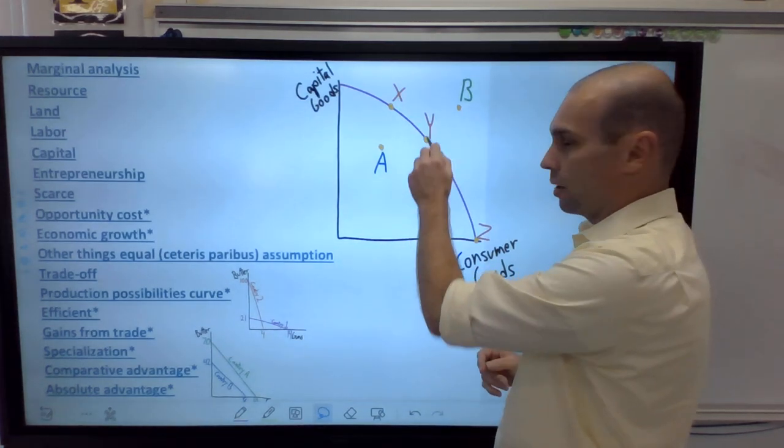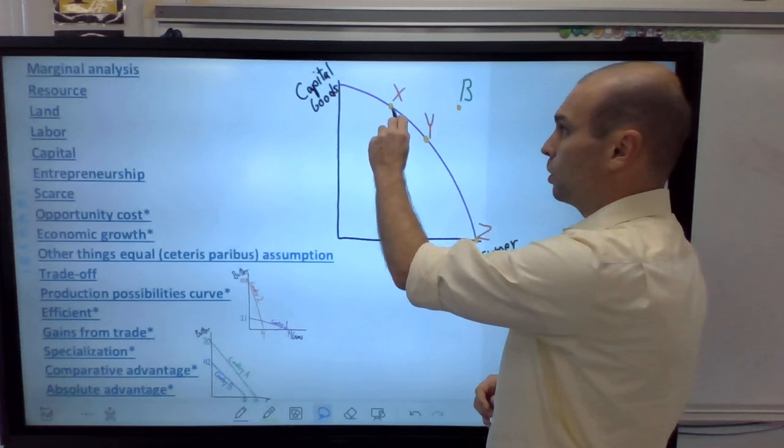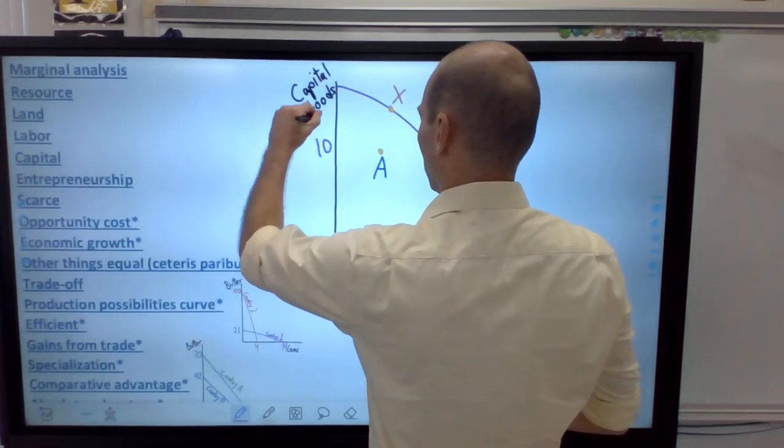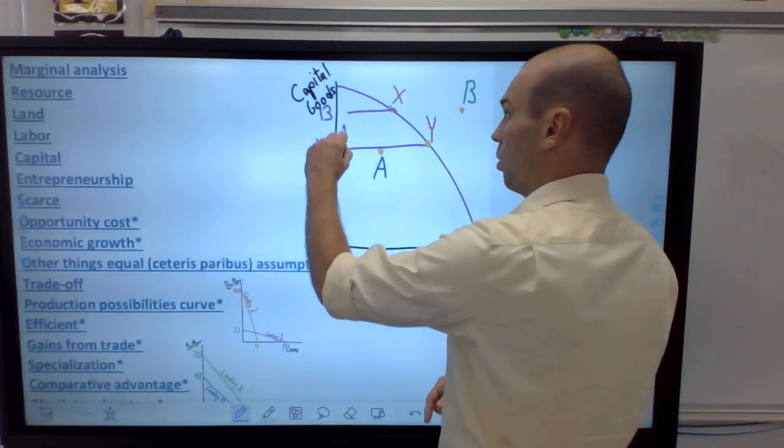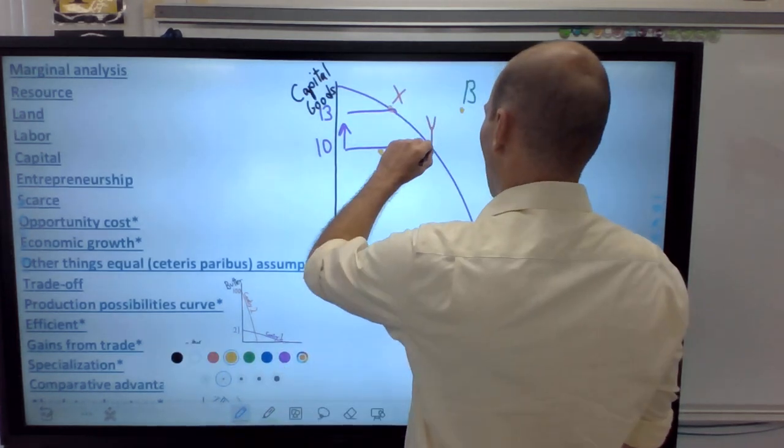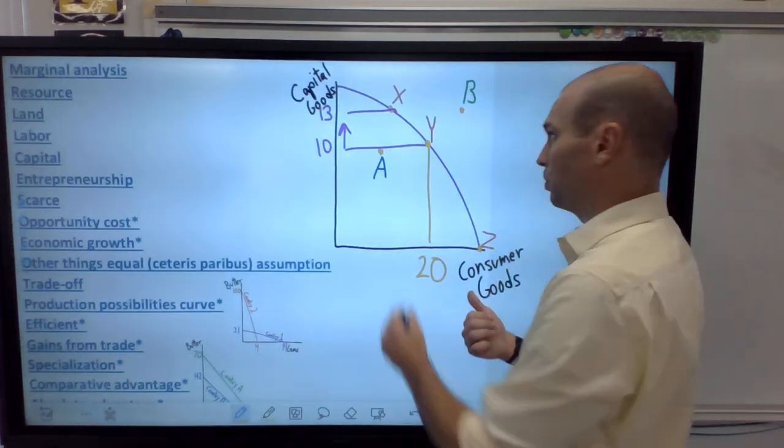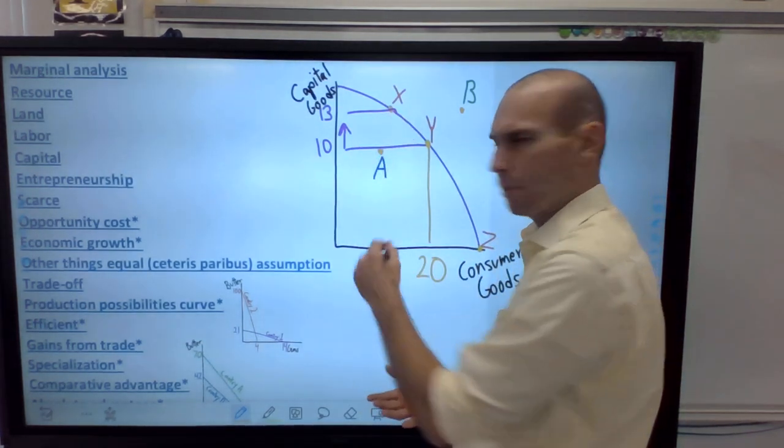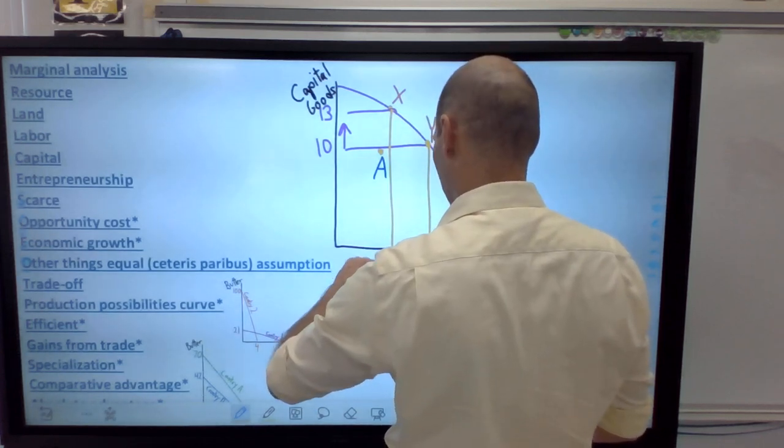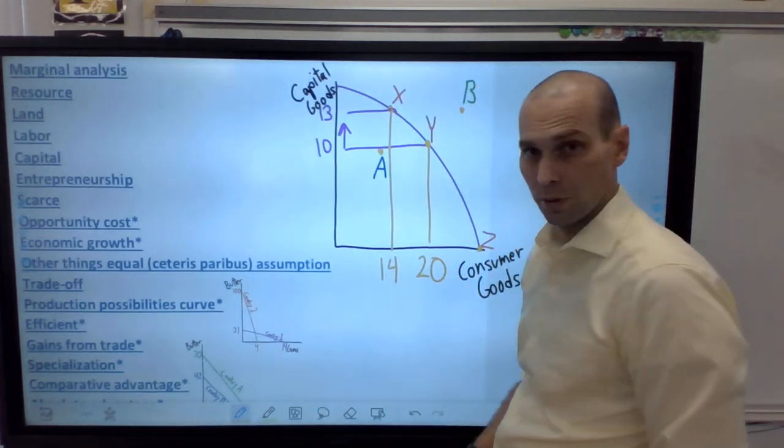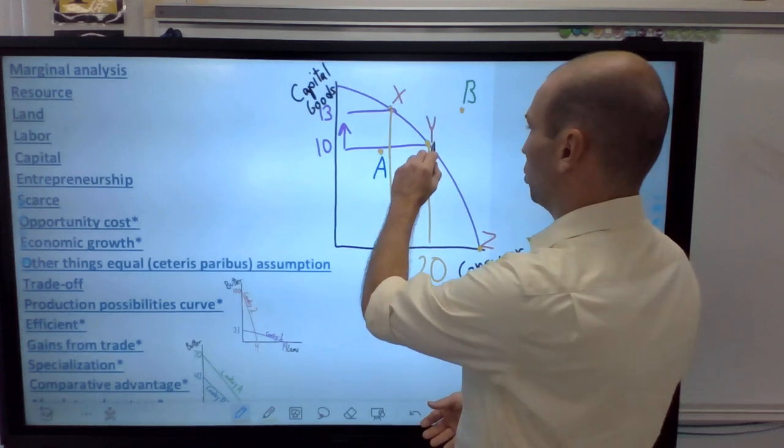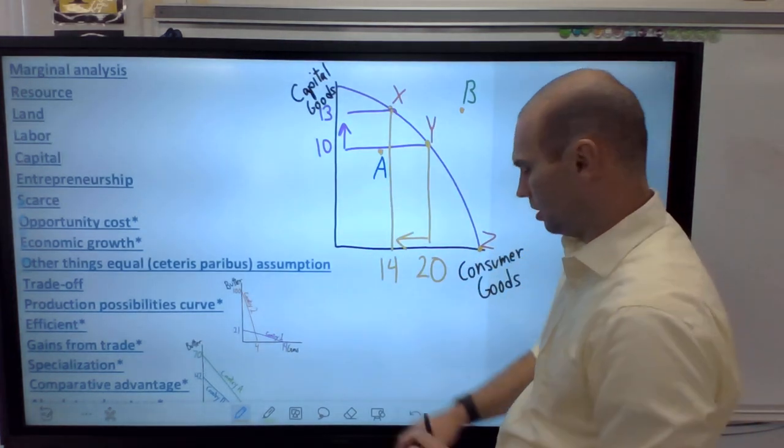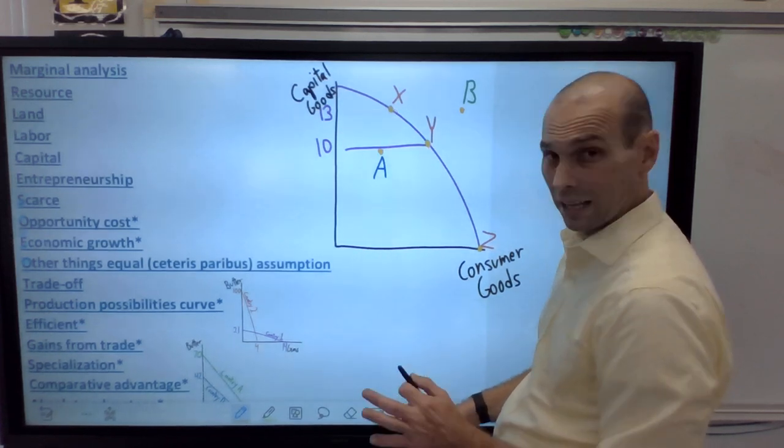So what it means is this. If I want to make more capital goods, I'm going to have to employ more land, labor, capital, more resources into making capital goods, which means I will get less consumer goods. So if I'm producing at point Y right here, and I want more capital goods, I can go to point X. So you notice I'll go up this graph. If this was 10 capital goods and this is 13 capital goods, well, I got more. But on the other hand, I started with 20 consumer goods.